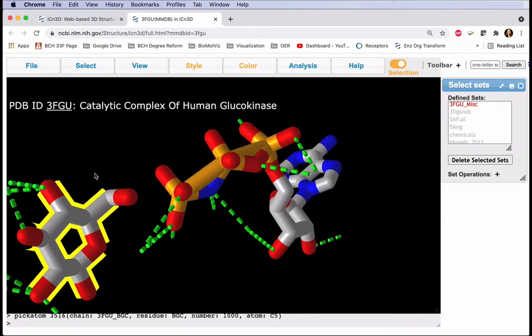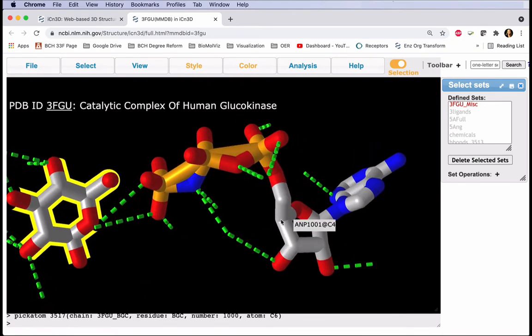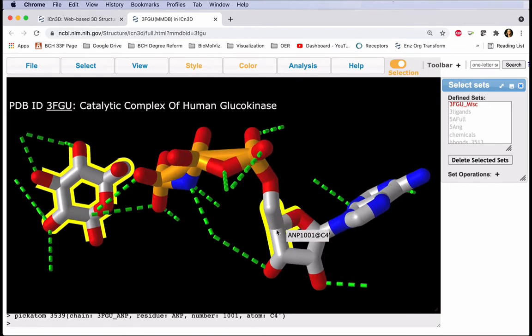And we only want carbon atoms, so we may have to reorient. And we'll do the same for our ANP ligand.